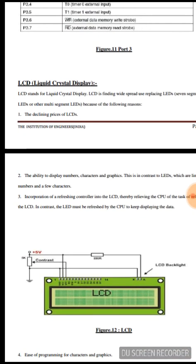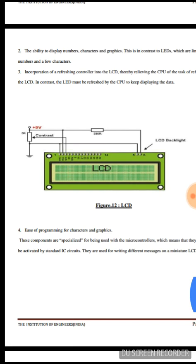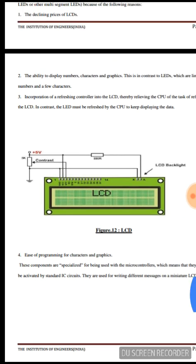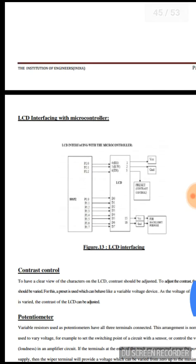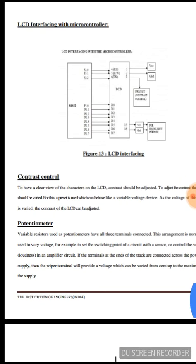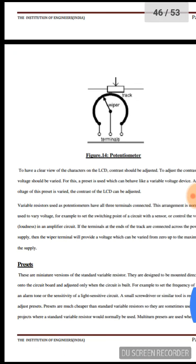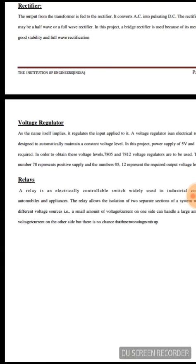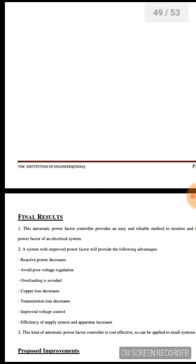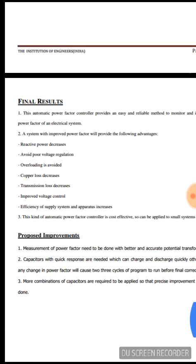The LCD is also a most important component used. The working of the LCD is given, including microcontroller-LCD interfacing, contrast control potentiometer, presets, transformer, rectifiers, relay, and voltage regulator. All components with their prescribed working are mentioned here.